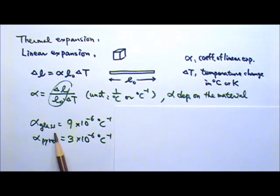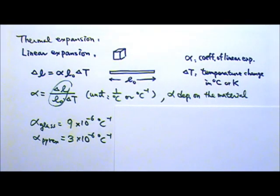For example, the alpha for normal glass is 9 times 10 to the negative 6, while the alpha for pyrex glass is a much smaller 3 times 10 to the negative 6. This is why glass baking dishes are made of pyrex glass.